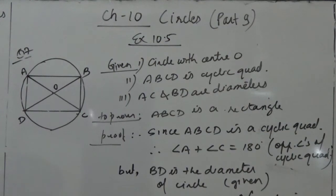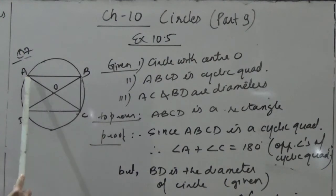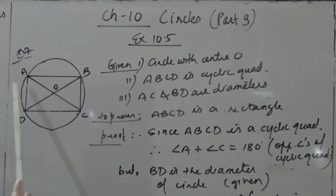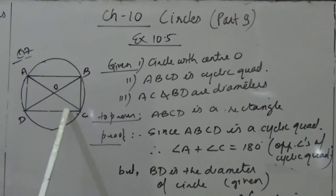We have to prove that the quadrilateral ABCD is a rectangle. To prove it is a rectangle, we need all angles equal to 90 degrees. Since ABCD is a cyclic quadrilateral, we know the sum of opposite angles equals 180 degrees. So angle A plus angle C equals 180 degrees — that is the property of opposite angles of a cyclic quadrilateral.